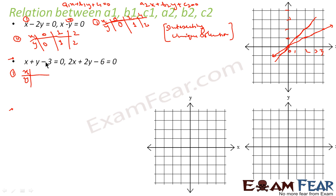For x plus y equals 3: if x equals 0, y becomes 3; if x equals 1, y becomes 2; if x equals 2, y becomes 1; if x equals 3, y becomes 0. This is my plot for x plus y minus 3 equals 0. We just put in the values and find the corresponding values.